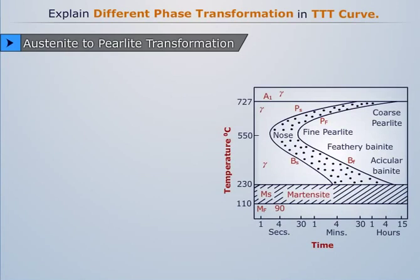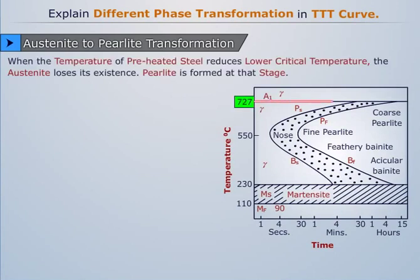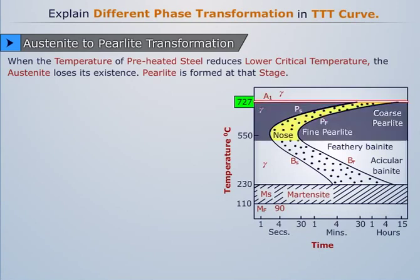Austenite to pearlite transformation. When the temperature of preheated steel reduces to lower critical temperature, the austenite loses its existence. Pearlite is formed at that stage.